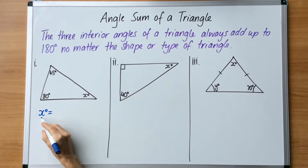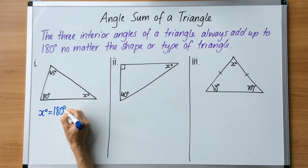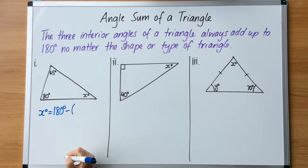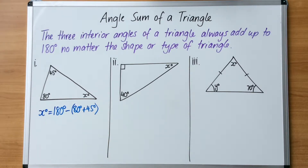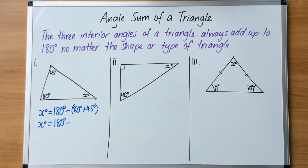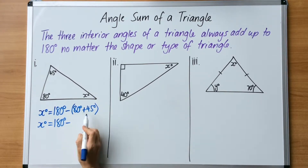x degrees equals — we put x degrees equals because that's the pronumeral we're trying to figure out — and we go 180 degrees minus. I've been given 80 degrees and 45 degrees, so we open up a bracket and put 80 plus 45 degrees and close the bracket. We follow our normal order of operations, working down the page. 180 degrees minus — we've got to work the brackets first because brackets come first in order of operations — so we add 80 and 45, and we get 125 degrees.